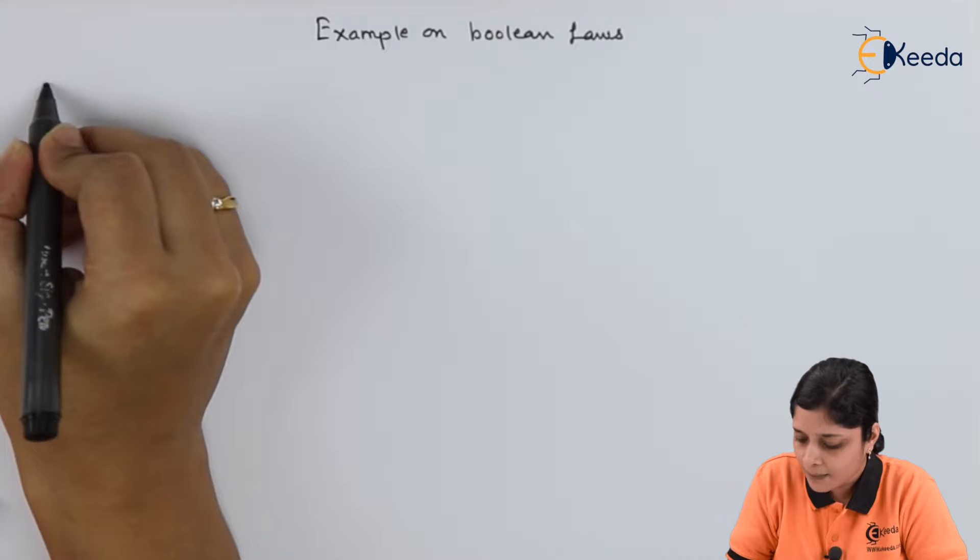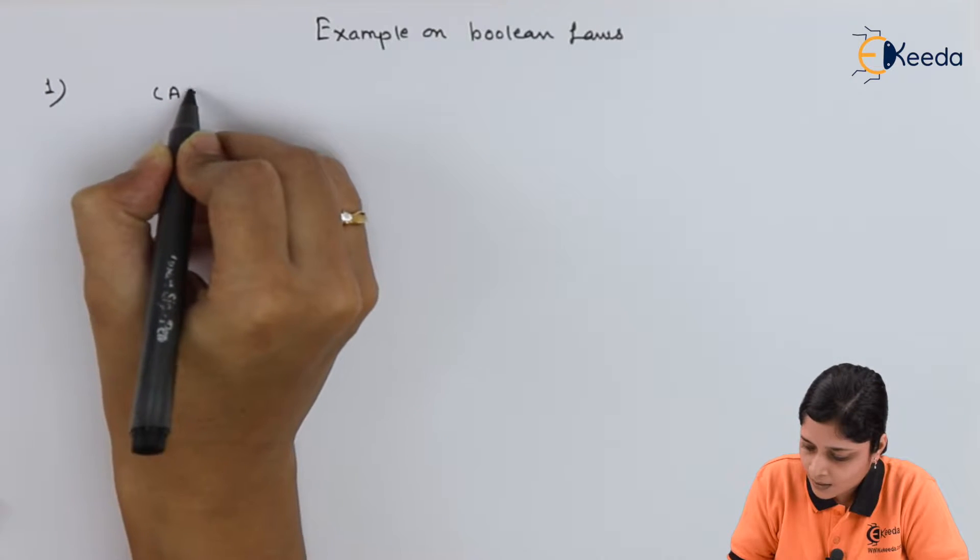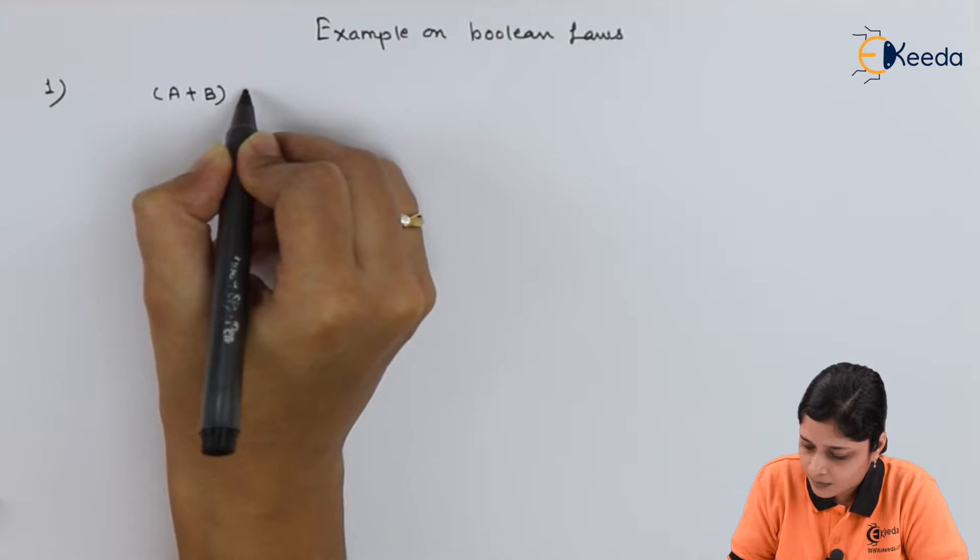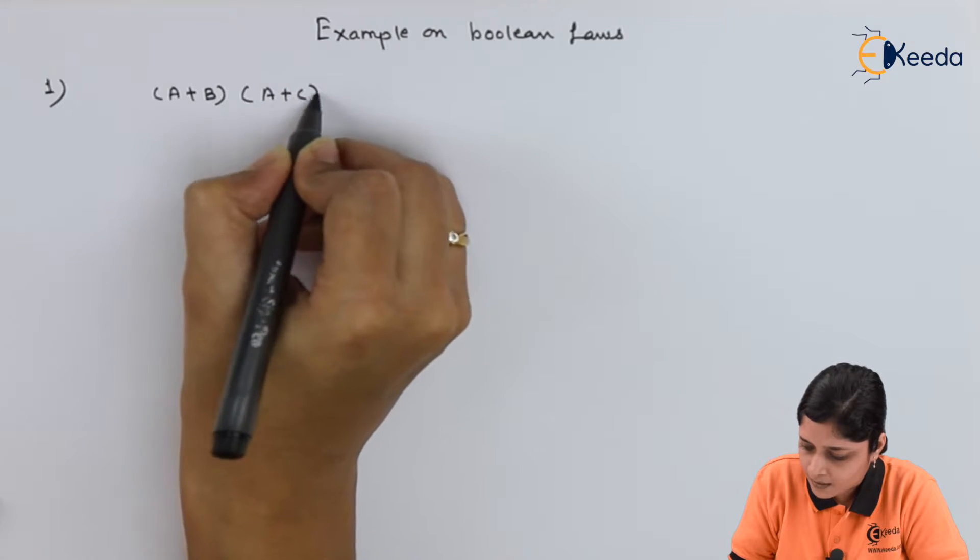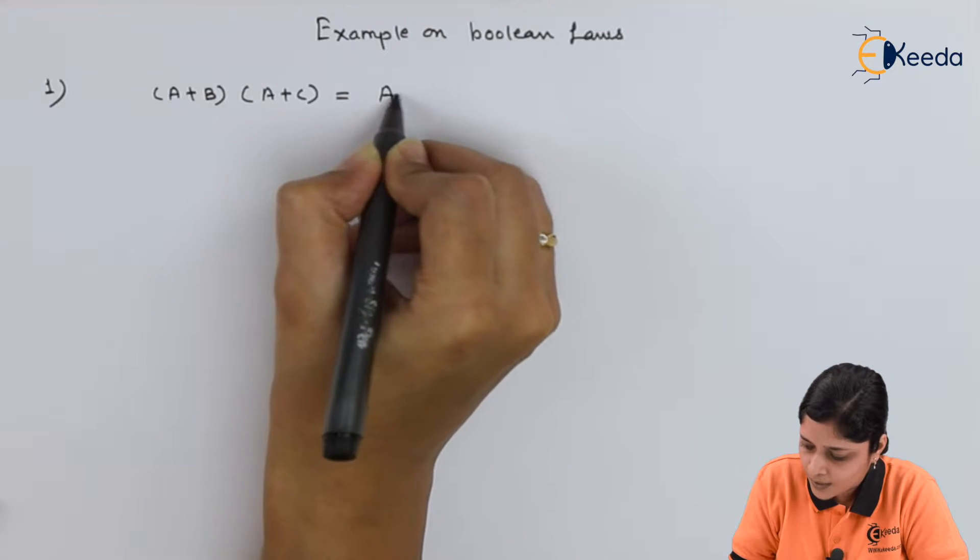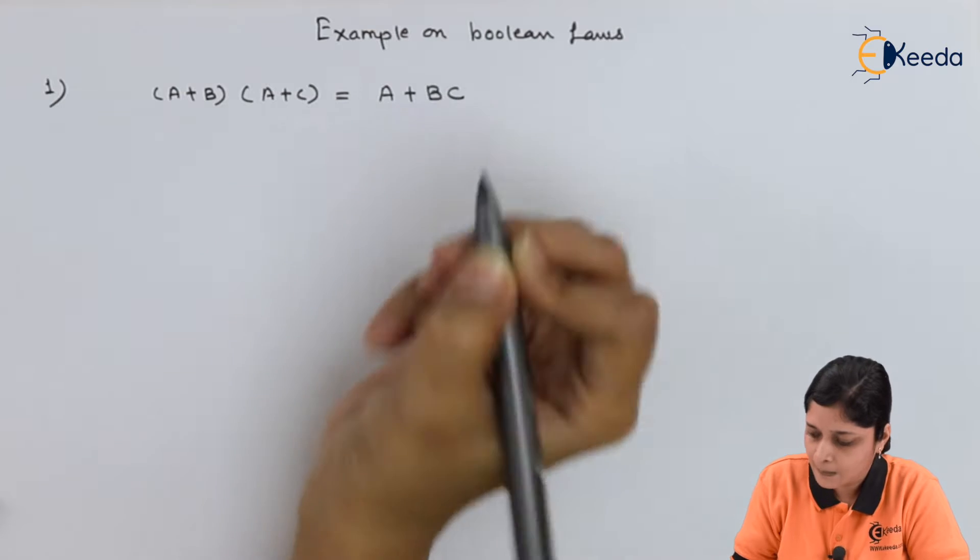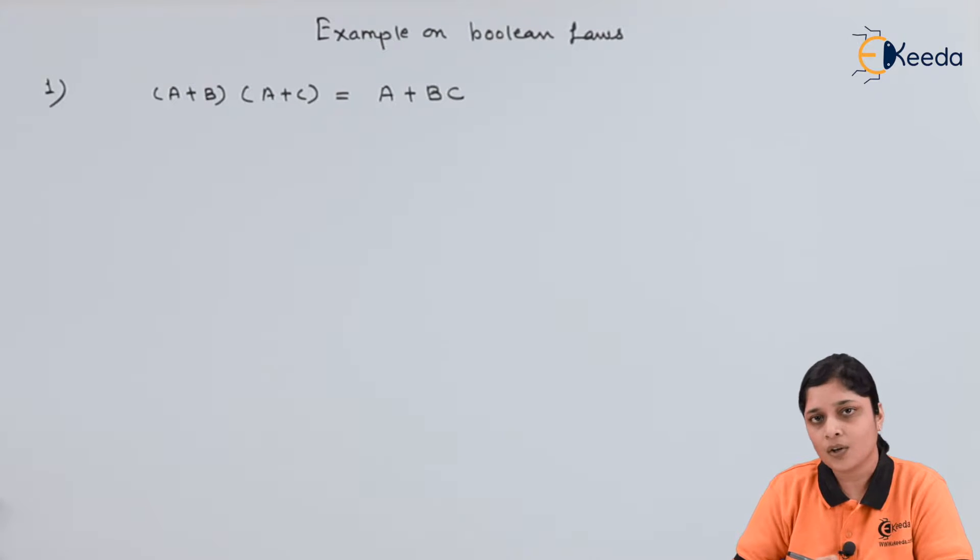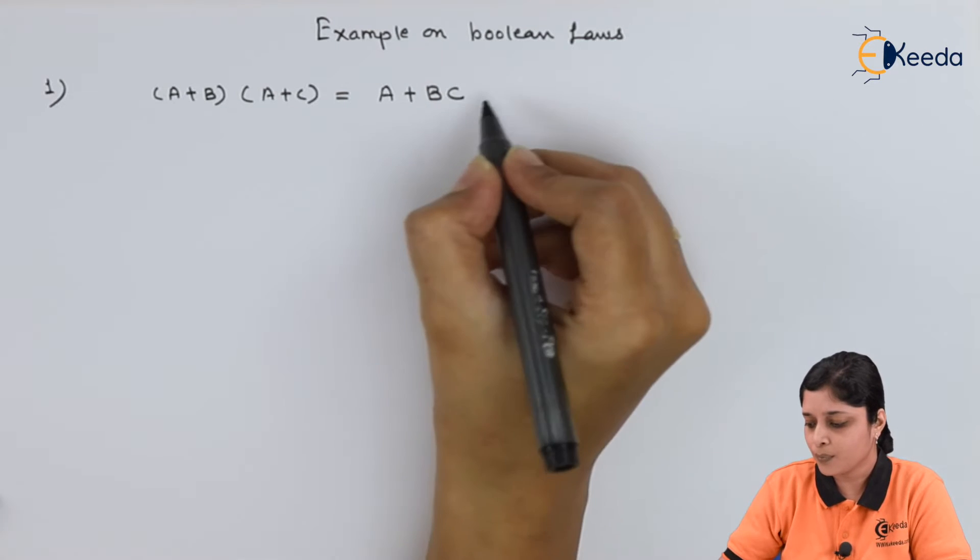Let's take first example: (A+B)(A+C), you have to prove A+BC. According to the Boolean laws, you have to prove this.